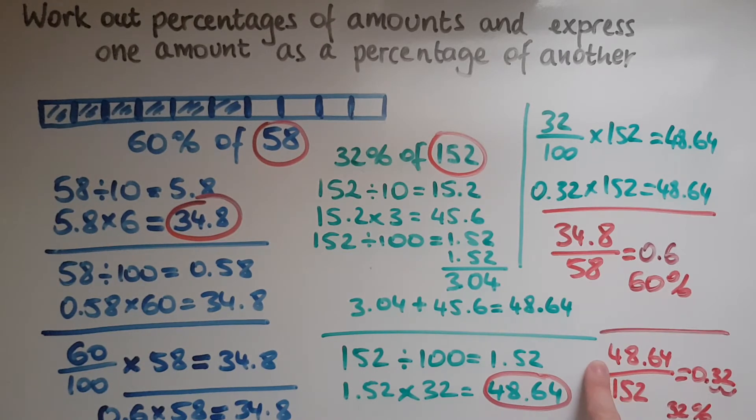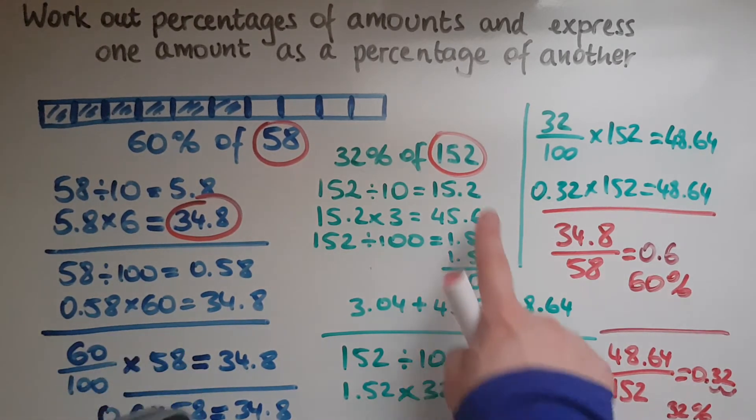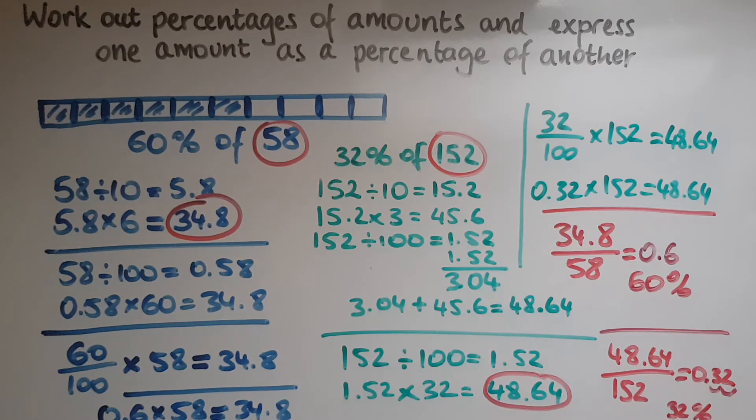We had 48.64 out of the total 152, which gave us 32%. So to work out one amount or express one amount as a percentage of another,